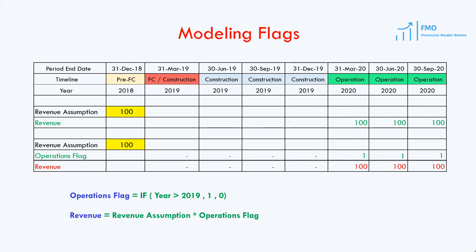First, the operations are transparent — our revenue projections are simply assumption times the flag. When the flag is 0 we get 0, and when the flag is 1 we get our revenue. Second, we can reuse our operations flag elsewhere, for example to model the operations costs or depreciation expense, and so on. There are many other events, such as an upfront fee that has to be paid at the financial close — we can easily and flexibly model it by using flags. We will also need to model the construction debt drawdown, which happens during the construction period. Again, we will use a flag.